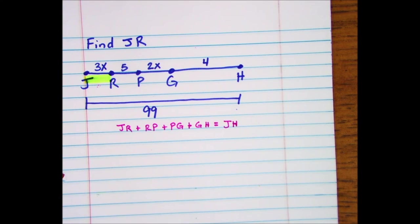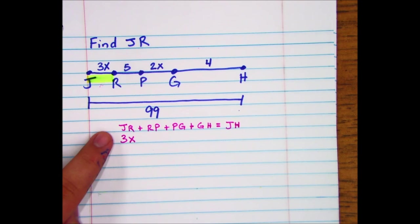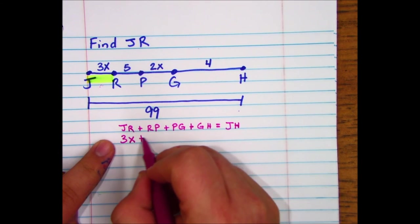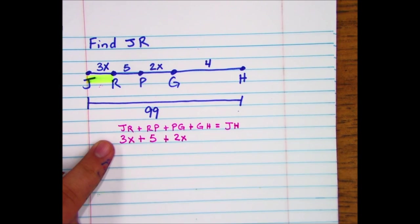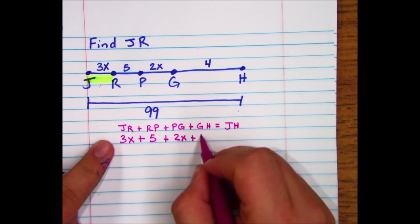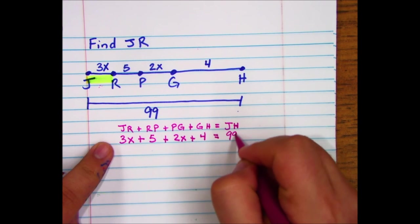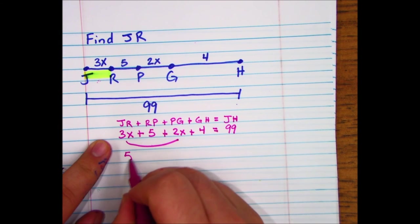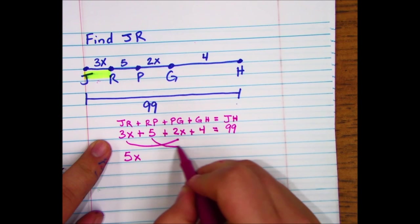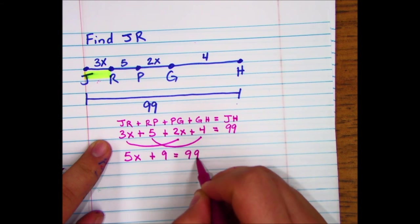In all previous examples we have taken JR plus RP plus PG plus GH and it's going to equal the entirety, JH. We know that JR is 3x plus RP which is 5 plus PG which is 2x plus GH which is 4, which is going to equal JH which is 99.